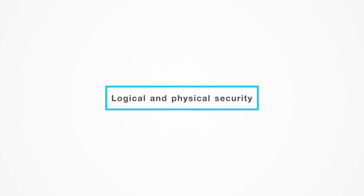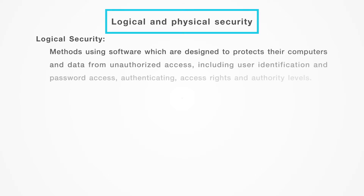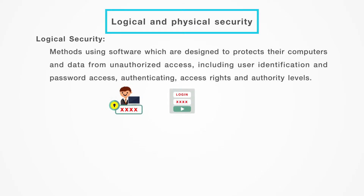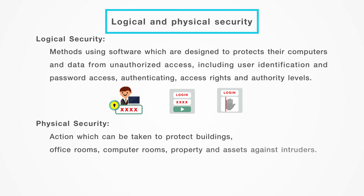There are two types of computer security: logical and physical security. Security can mean either physical security, as in physical access control, or logical security, as in virus detection or unauthorized access. Logical access control generally features identification, password access, authentication, and authorization protocols. This is different from physical access control, which utilizes keys, badges, or other tokens to allow access to certain areas.